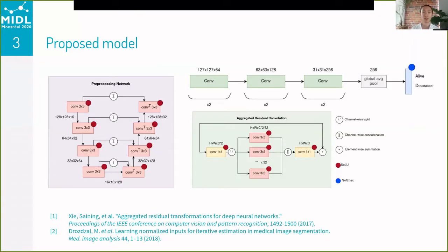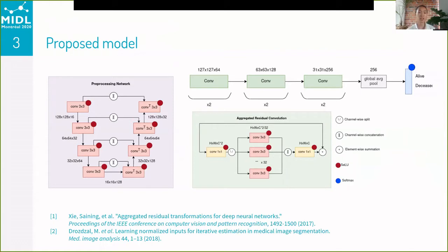Our proposed model is a deep convolutional neural network with two sets of improvements. The first, shown on the left, is the FCN preprocessing network, whose goal is to perform task-oriented image normalization — shown to be effective in a previous study by Michal Jostal for a liver segmentation task. The second improvement was to replace each convolutional layer with an aggregated residual convolutional block, as used in the popular ResNeXt model.